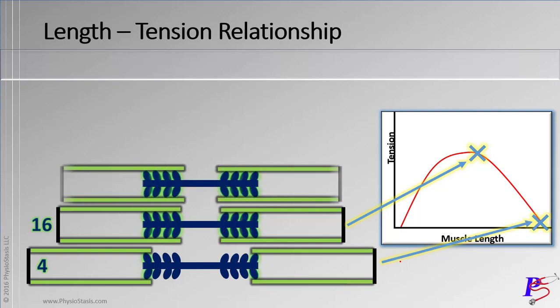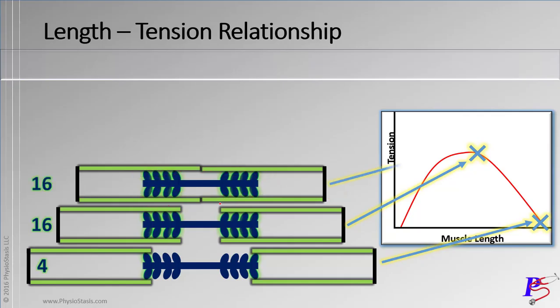Now let's get shorter again — the length is decreasing further. How many myosin heads are overlapping with the actin? We count — one, two, three, four — same thing on each side — we still have all 16. So even though the sarcomere length has decreased, we still have all 16 heads interacting, and we still have a high tension pulling on these actin strands.